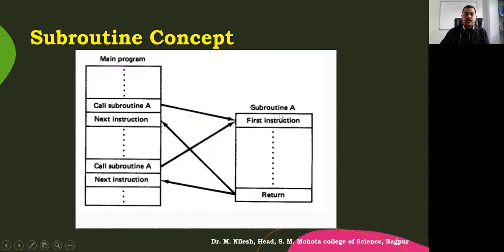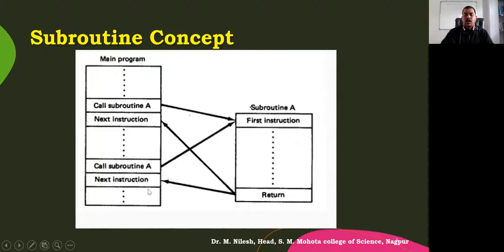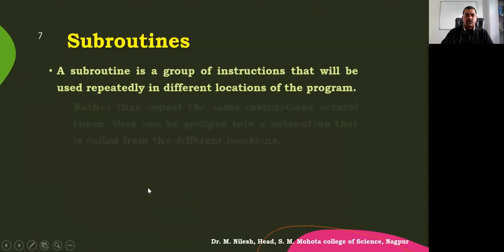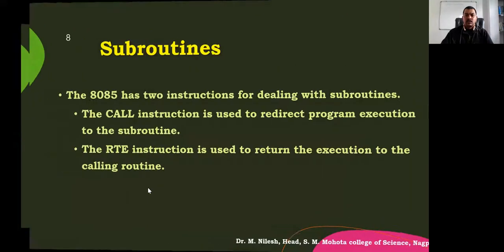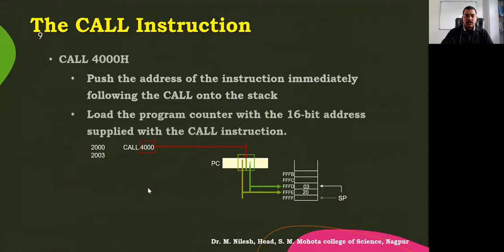You can call the subroutine as many times as required. At the end we have the return instruction so that it returns back to the main program again and executes another series of instructions. Then again we can call that subroutine, and it will execute the first instruction and return to the next part of the program. This is how the subroutine works.